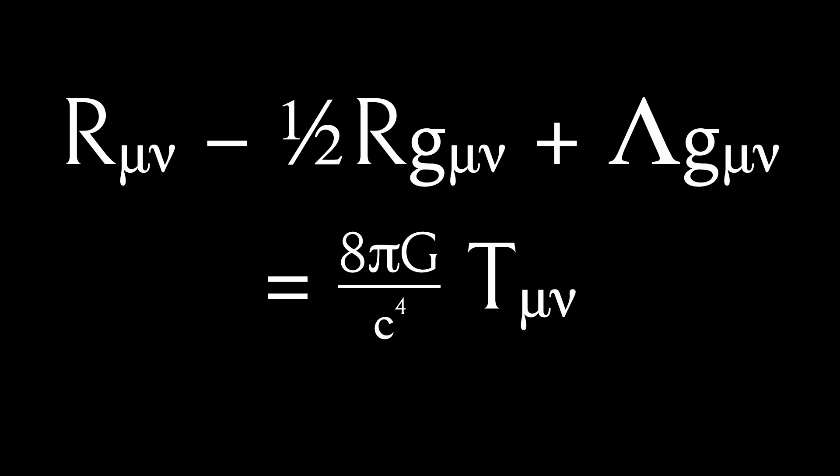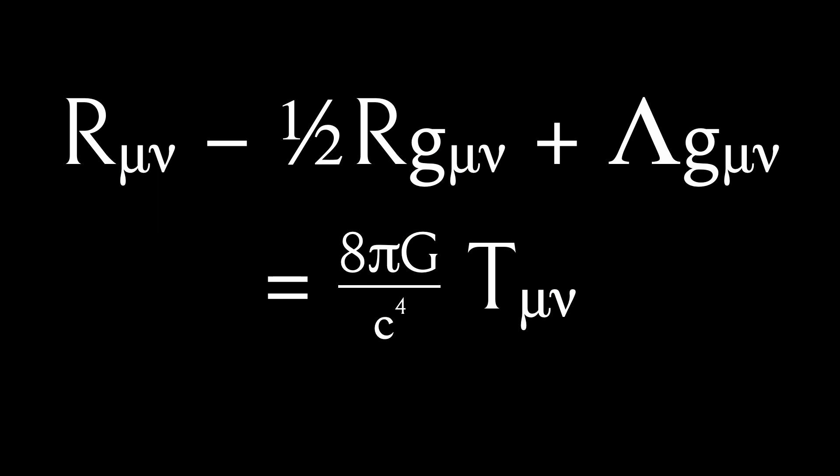Einstein's equations may be written as R-mu-nu minus a half R g-mu-nu plus lambda g-mu-nu equals 8 pi G upon c to the power of 4, T-mu-nu. Not quite as snappy as E equals mc squared, but still. This equation describes how space and time are distorted by matter — in other words, it explains gravity.